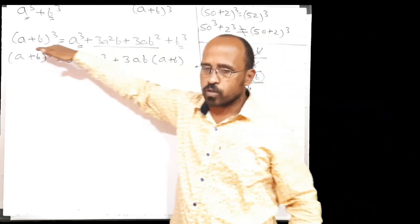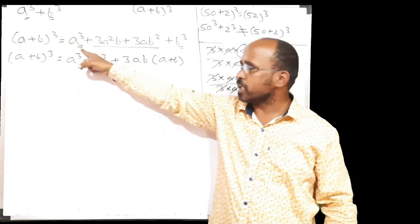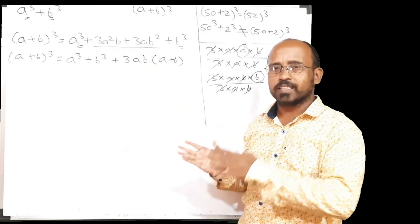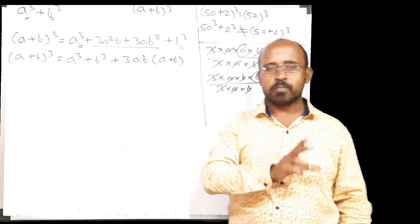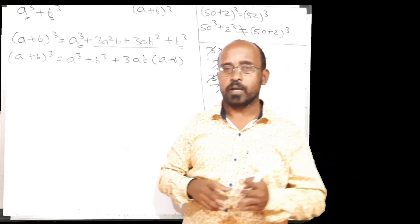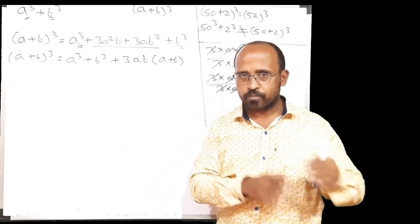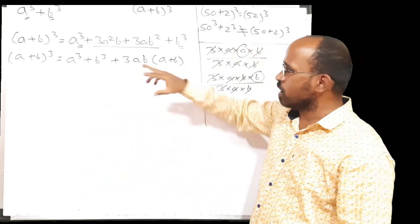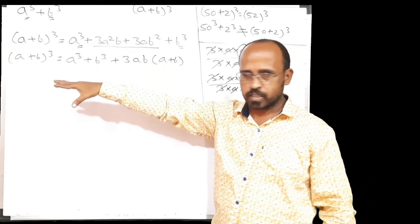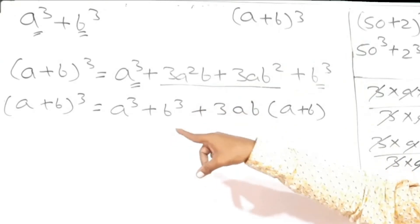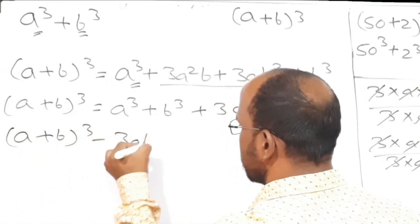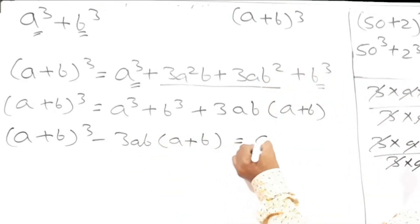We first wrote the formula for a plus b cube. Second, we arranged a cube plus b cube together because we want their formula. Then we found out common between remaining terms because we are doing factorization, hence it is mandatory to find out common. We have to do the factorization unless and until it is possible to find out anything common between at least two terms. Now we have to find out the formula for a cube plus b cube. Those two terms we will keep on one side and the remaining part will shift to the another side. So this plus 3ab into a plus b, after changing its side, will change into minus 3ab. So it will be a plus b cube minus 3ab into a plus b, which is nothing but a cube plus b cube.